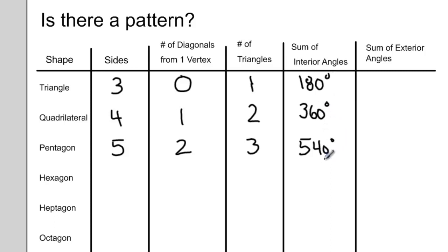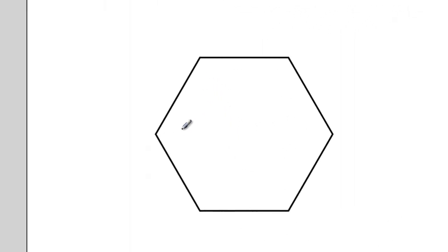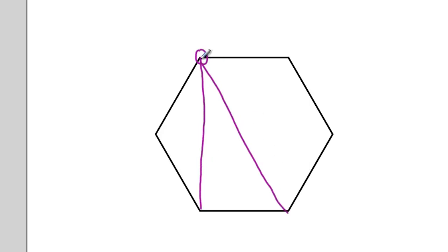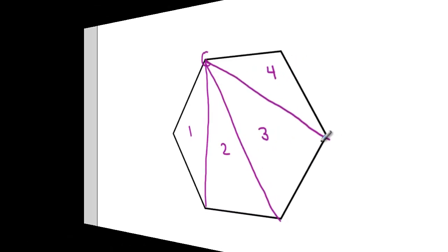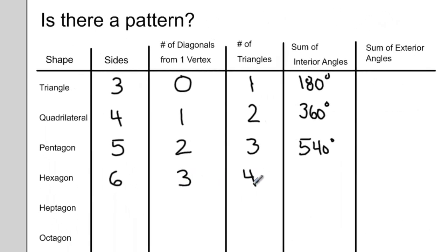Do you see a pattern yet? What if we drew a hexagon? Hexagons have six sides. If I pick one vertex on my hexagon and draw lines from that vertex to as many vertices as I can, I can see that I'm drawing three different lines and making four triangles. So I have three diagonals, which creates four triangles. And if I were to measure the interior angles, I would have 720 degrees. Do you see now that each time we add a side, we're really adding 180 degrees to our sum of interior angles?